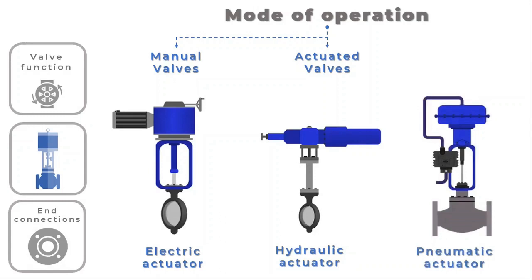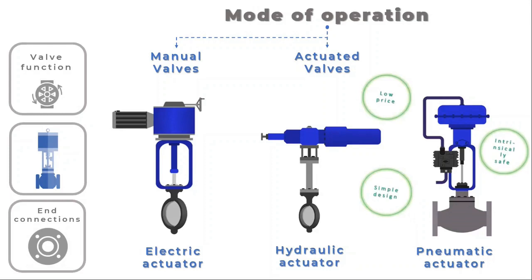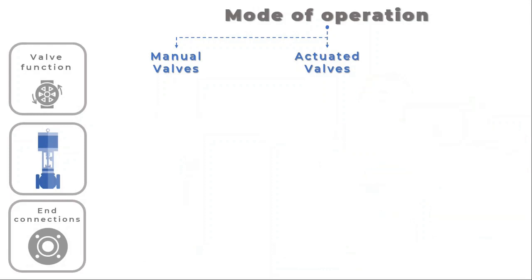Electric motor actuators move the valve stem using a reversible electric motor with a gearing arrangement that enhances torque and slows rotational speed. They were initially intended for on-off applications but some have since been improved for continuous control applications. They are also employed in places where compressed air is not accessible. Hydraulic actuators deliver the force necessary to open a valve using a piston and a pressurized liquid. Actuators that use pneumatics employ air pressure to generate the force necessary to open a valve — they are the most popular types of actuators because of their straightforward construction, reasonable costs, and inherent safety.